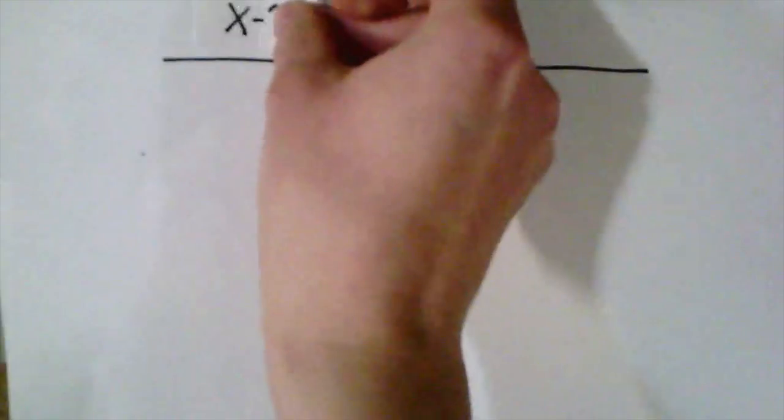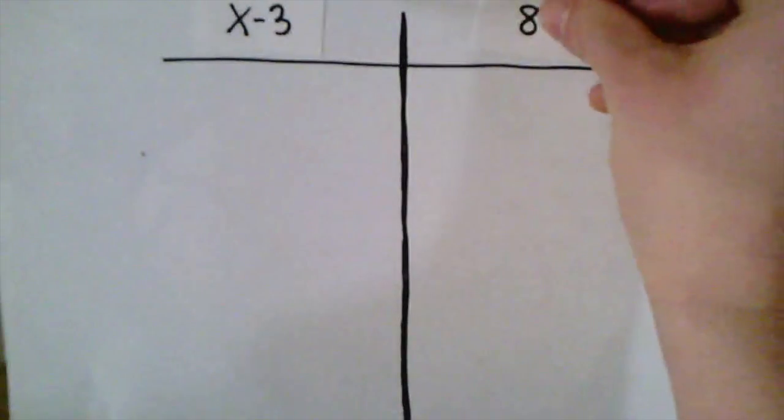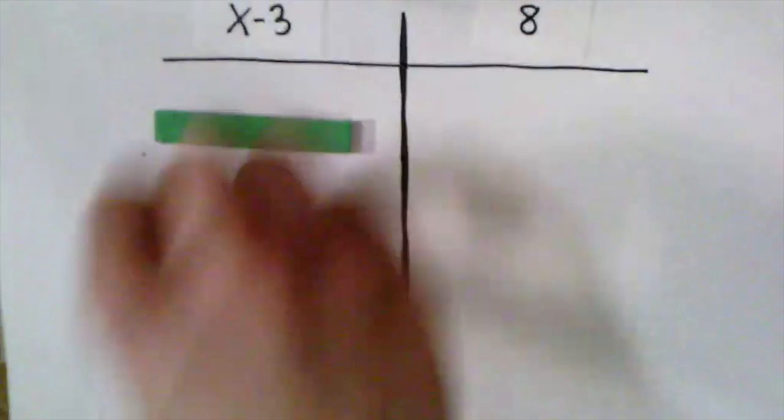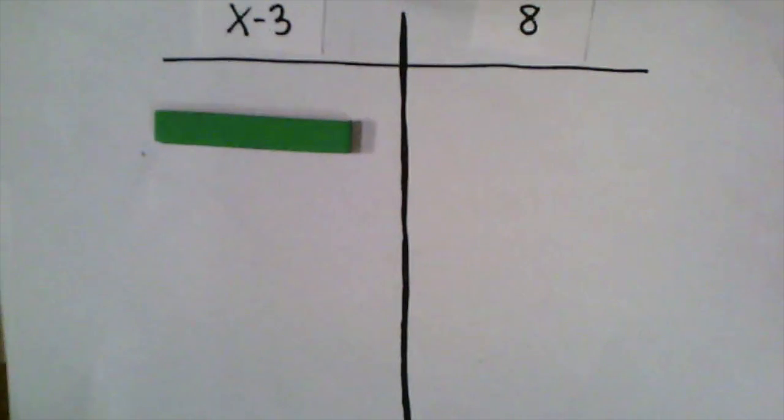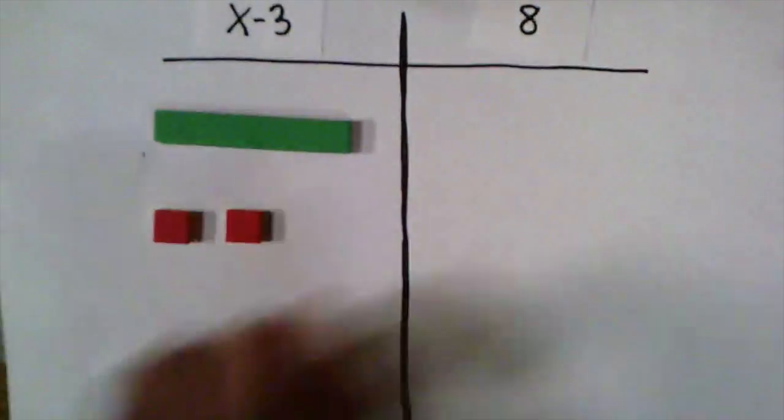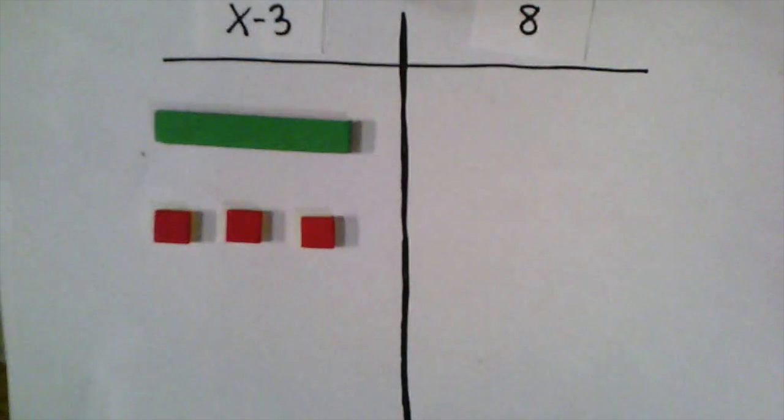In our second problem, we're going to model a subtraction problem. In this one, we have x minus 3 equals 8. So on the left side, we need to have an x and then we also need to have minus 3. We usually think about minus 3 as taking away 3, but it's also the same thing as a negative 3. So I'm going to use three red tiles to represent that negative 3.